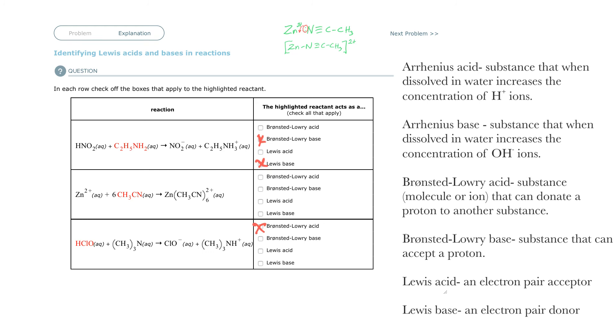But if it is a Bronsted-Lowry acid, it's not bringing any electrons with it, so it has to share the electrons of the base that it's joining with. And so since it's doing that, it's acting as also a Lewis acid. So if it's a Bronsted-Lowry acid, it will also be a Lewis acid. If it's a Bronsted-Lowry base, it'll also be a Lewis base.